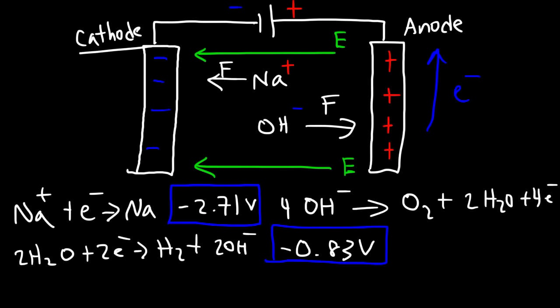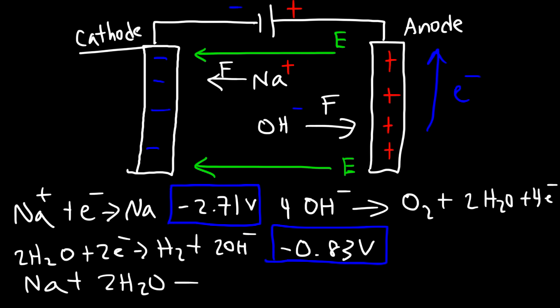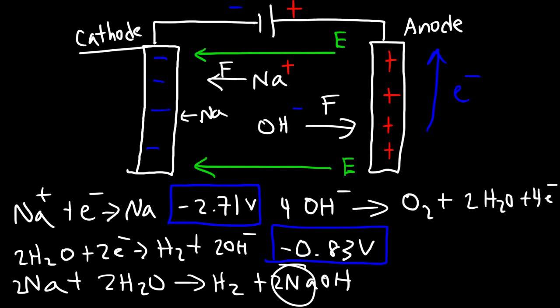If by some miracle sodium metal did form at the cathode, it would immediately react with water to create hydrogen gas and sodium hydroxide — since sodium is known to react explosively with water. So even if sodium formed, it would immediately react with surrounding water molecules and revert to the Na⁺ cation. Because the cell potential for sodium reduction is highly unfavorable at -2.71 V, it won't form, and if it did it returns immediately to the more stable Na⁺ state.